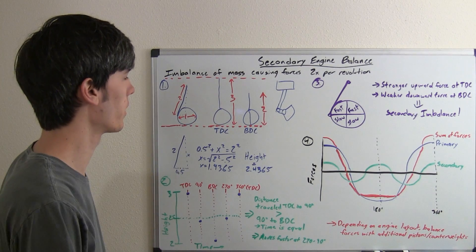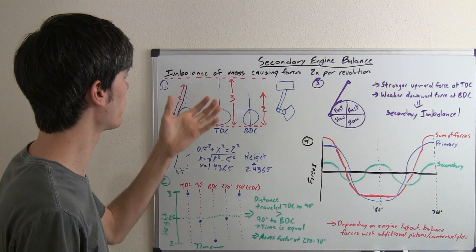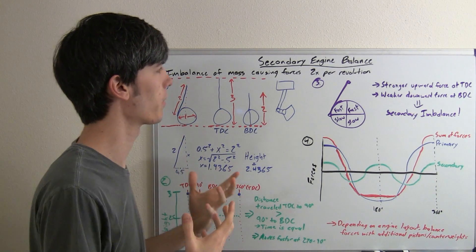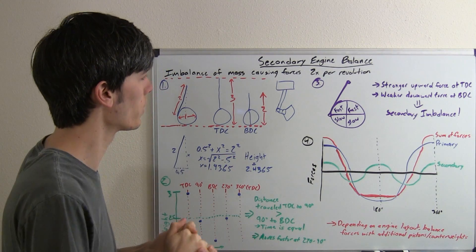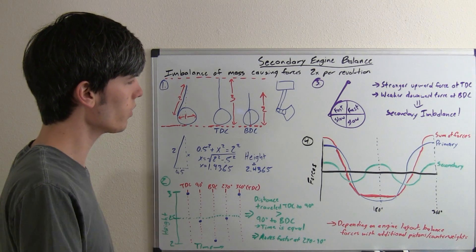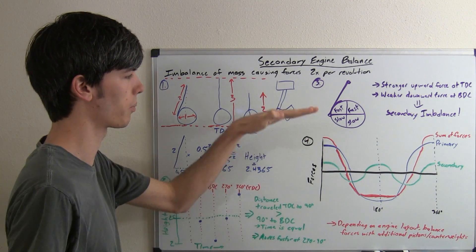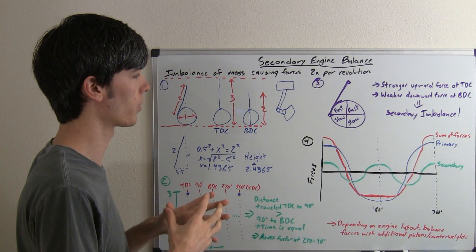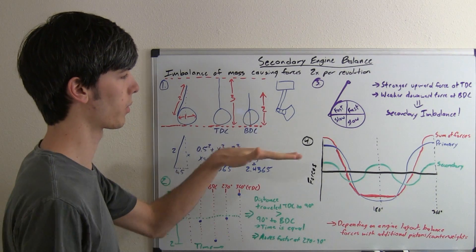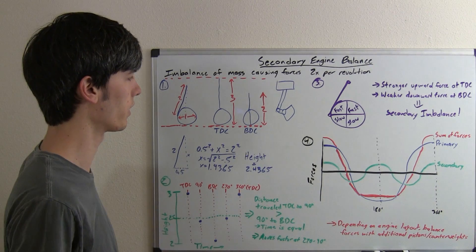So secondary engine balance forces - this is balancing of reciprocating mass that causes an imbalance two times per revolution rather than one time per revolution. For example, with your primary forces you've got the piston moving up and down and that's a primary force. Secondary forces are going to be occurring twice for that same revolution for that piston moving up once and then down once.